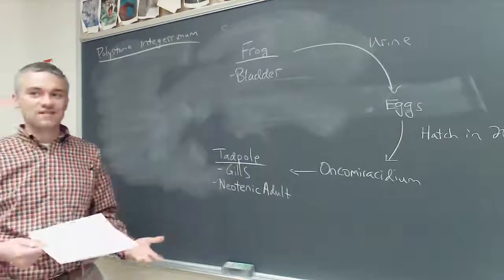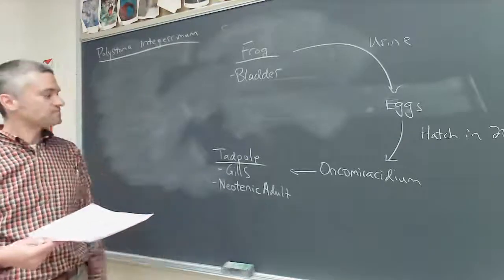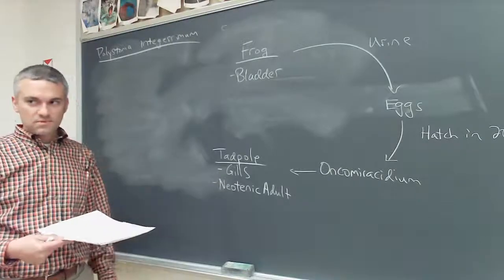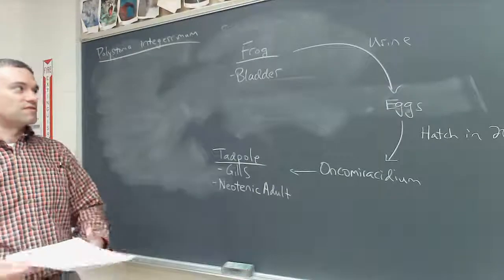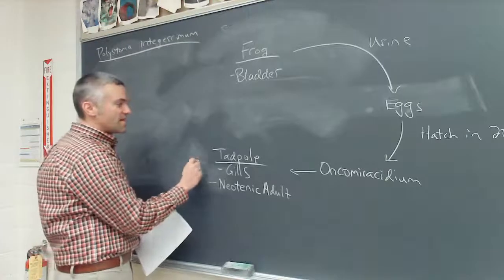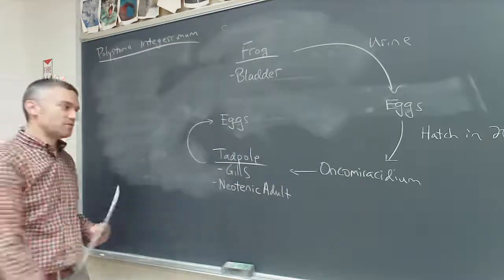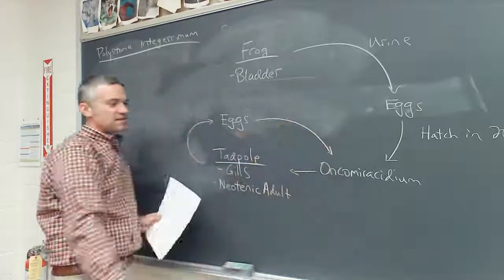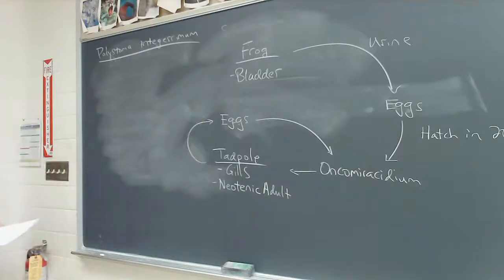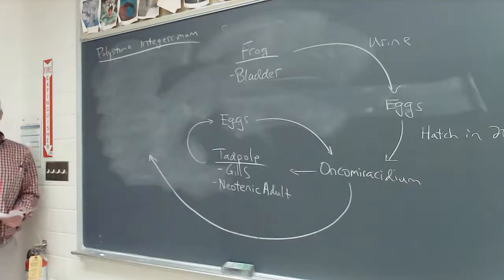The neotenic adults produce eggs that get released, those eggs hatch releasing oncomiracidium, and those oncomiracidium can go find gills of tadpoles. But those tadpoles aren't going to be around forever, because tadpoles undergo metamorphosis — they lose their gills, grow legs. These guys attach to the gills of a metamorphosing tadpole and sense that the tadpole is undergoing metamorphosis.